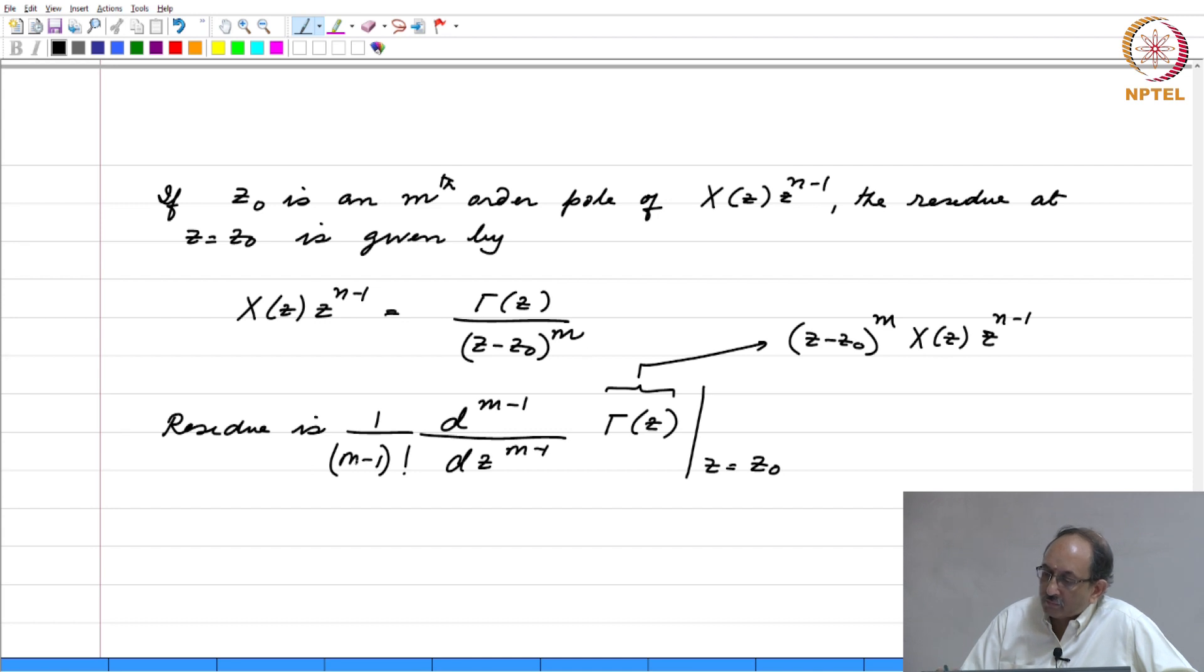Therefore, m minus 1 is 0 factorial, 0 factorial is 1. Again, if you put m equal to 1, you get the 0th derivative. 0th derivative means taking no derivative at all.